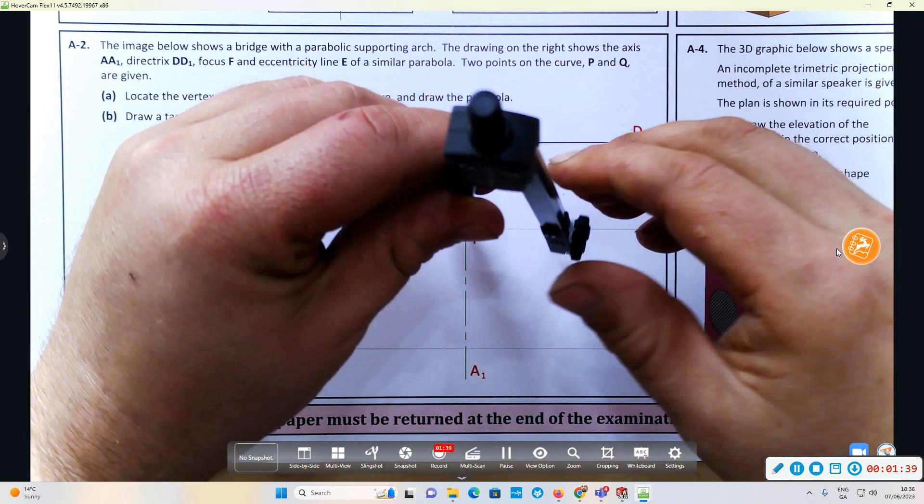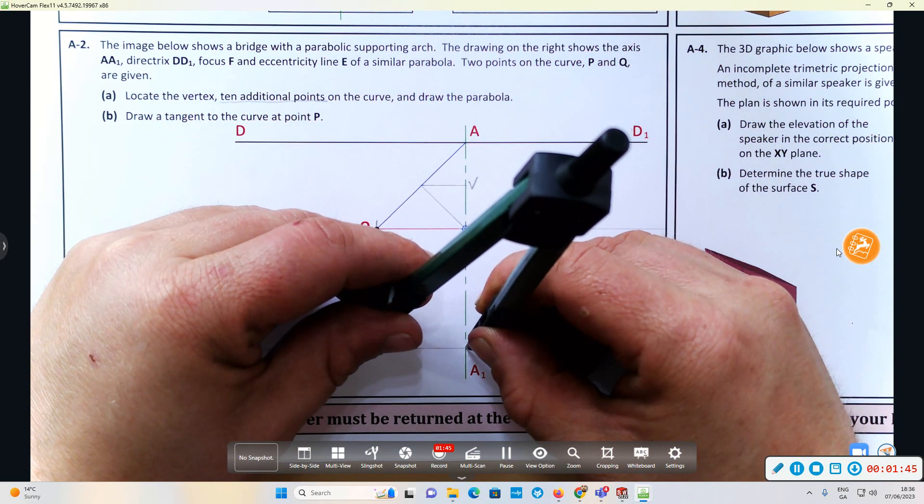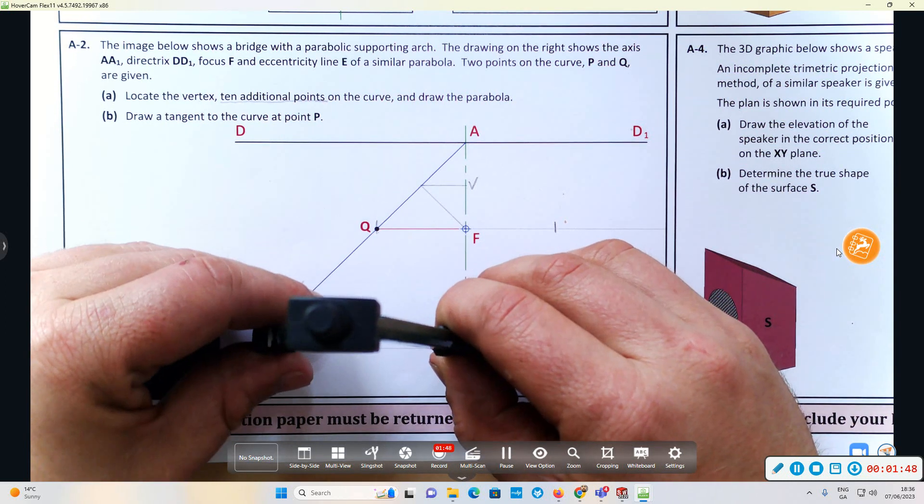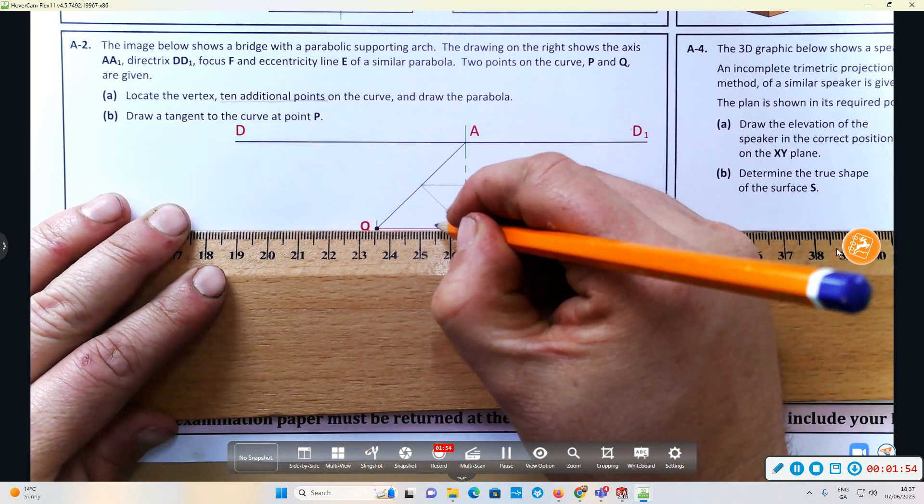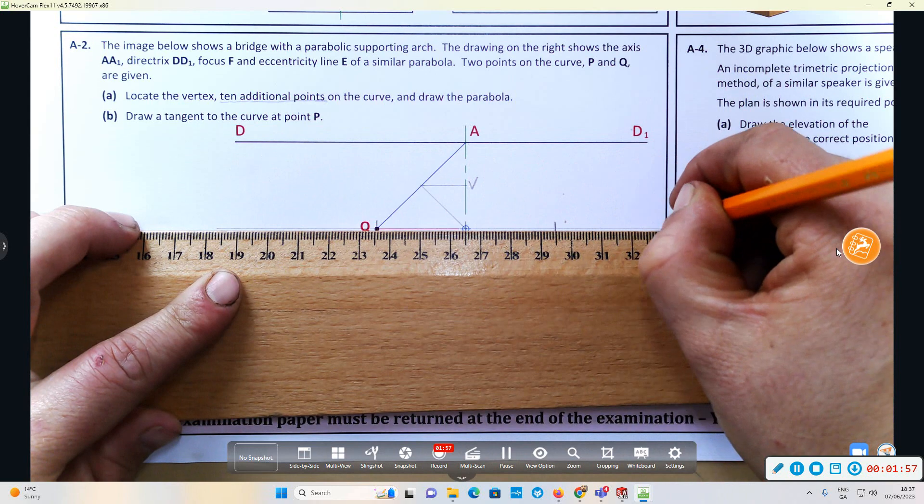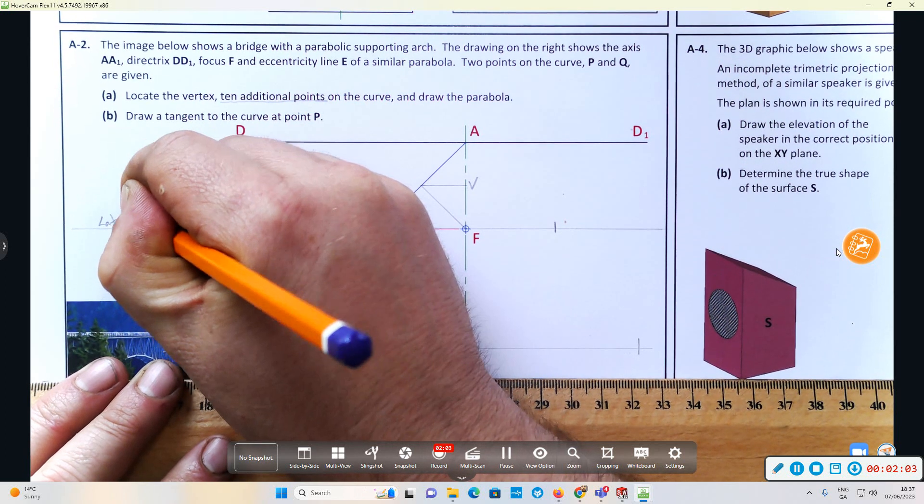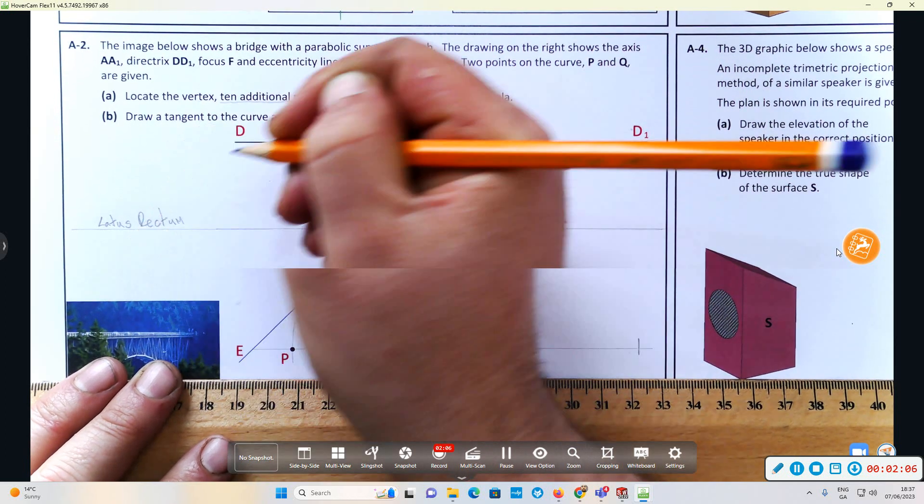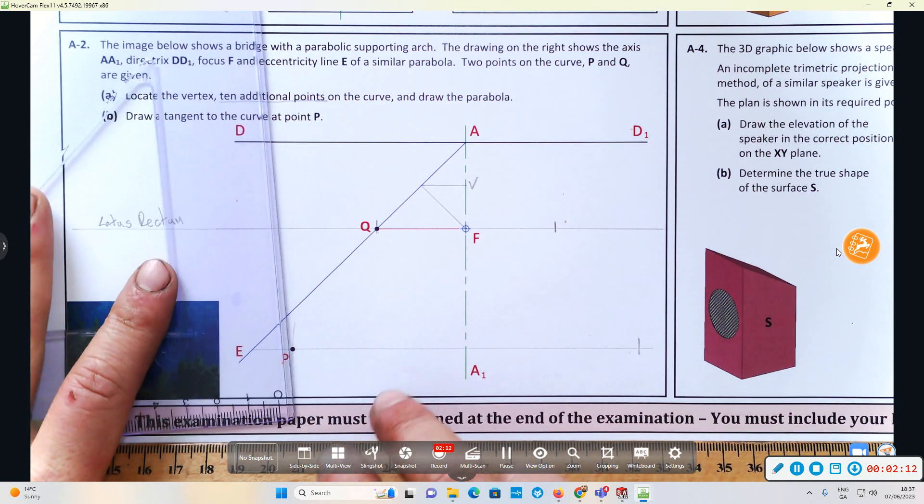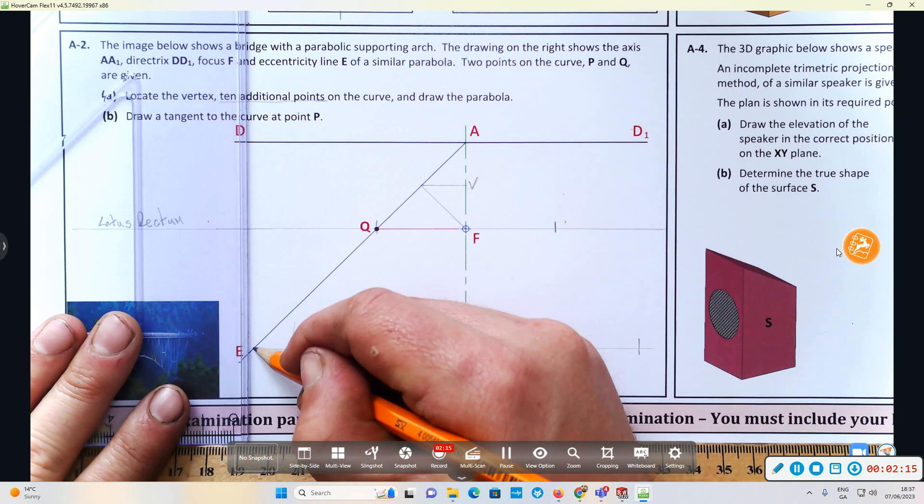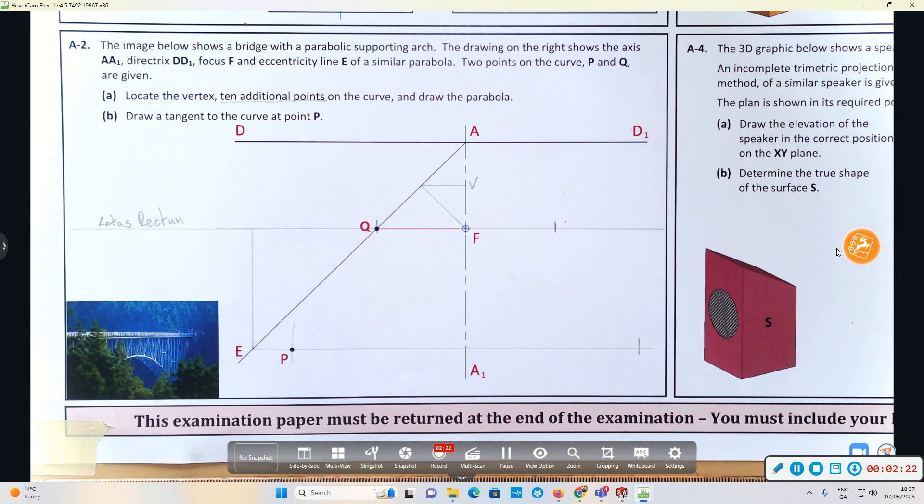I'm going to locate P and Q on the opposite sides. This line runs from F parallel to the directrix—this is the latus rectum. How you would find a point on the parabola is draw a line out any distance from the directrix. When it hits the line of eccentricity, bring it parallel to the axis.